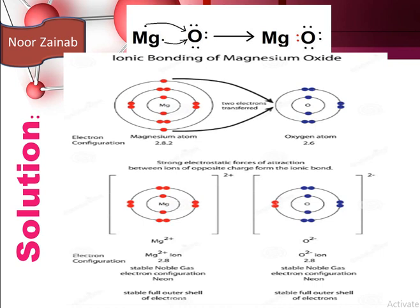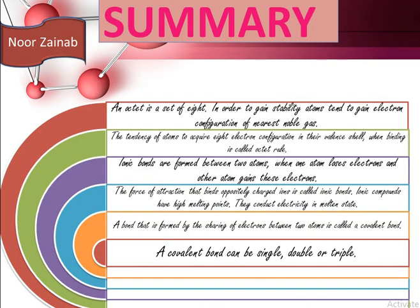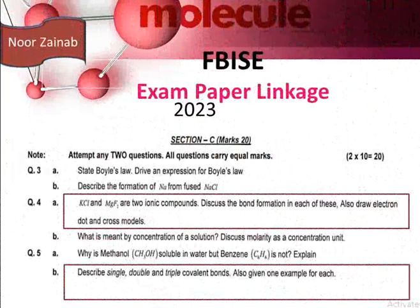An ionic bond is formed between magnesium and oxygen due to electrostatic attraction between Mg²⁺ and O²⁻. To recap: an octet is a set of eight electrons. Atoms tend to gain the electronic configuration of the nearest noble gas. The tendency of atoms to acquire eight-electron configuration in their valence shell when bonding is called the octet rule. Ionic bonds are formed when one atom loses electrons and the other gains them. Ionic compounds have high melting points and conduct electricity in molten state. A covalent bond is formed by sharing of electrons and can be single, double, or triple.